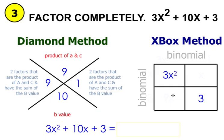And then in the other two empty boxes, you're going to write these two factors along with the variable. So this will be 9x and this will be x.